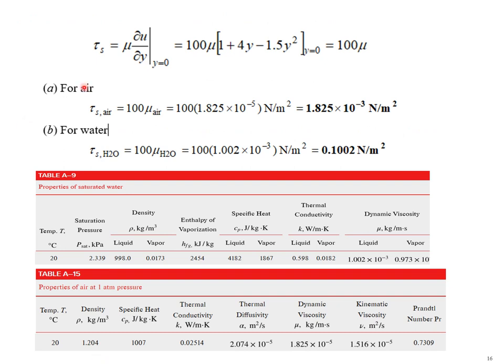Continuing our problem from the previous slide, we determined that the wall stress was equal to 100 times mu. So we have to find what value of mu is. For air, we can look in table A-15.